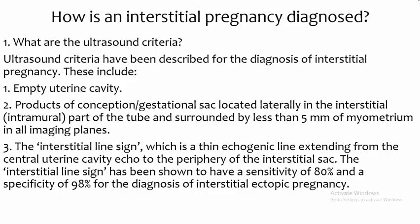How is an interstitial pregnancy diagnosed? Ultrasound criteria have been described. These include: (1) empty uterine cavity; (2) a gestational sac located laterally in the interstitial and intramural part of the tube, surrounded by less than 5 mm of myometrium in all imaging planes.